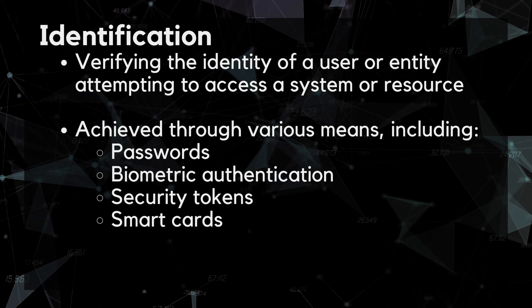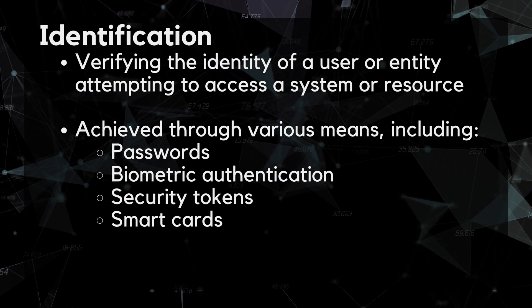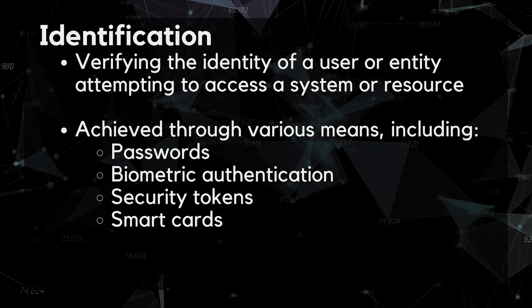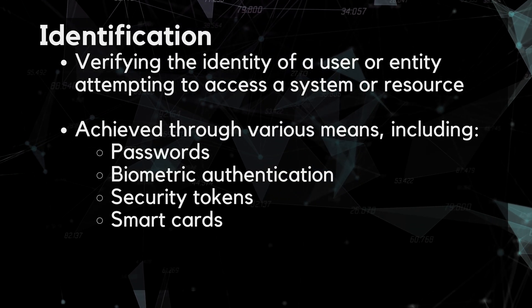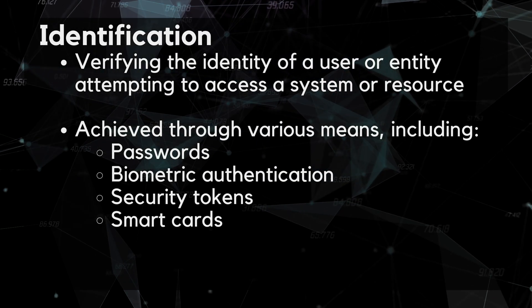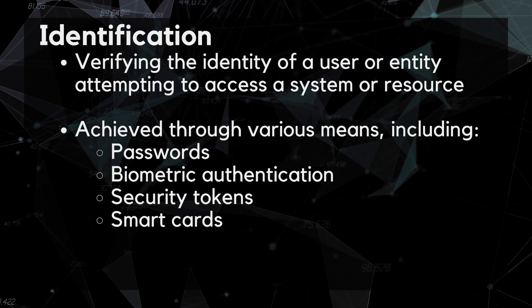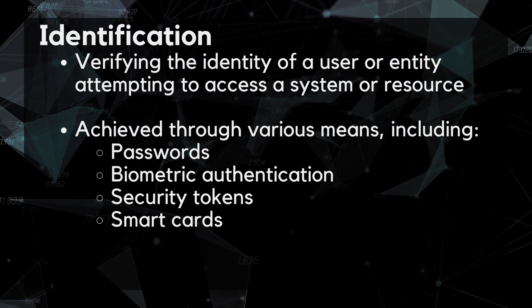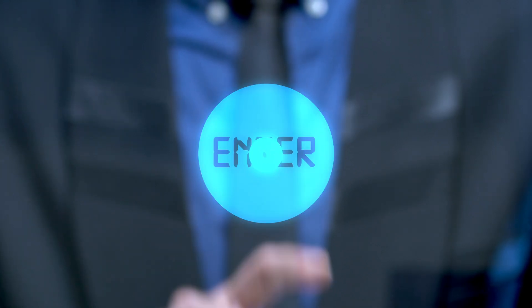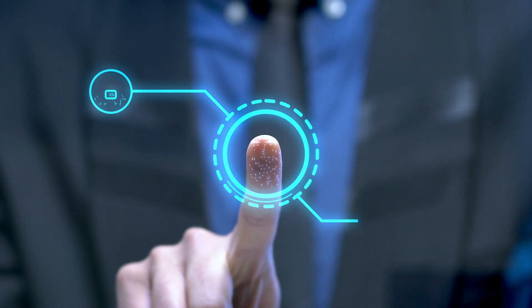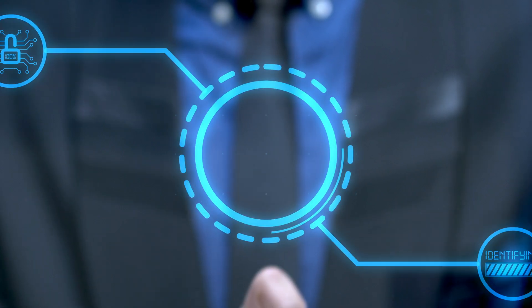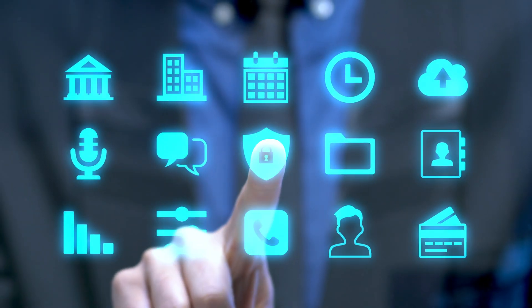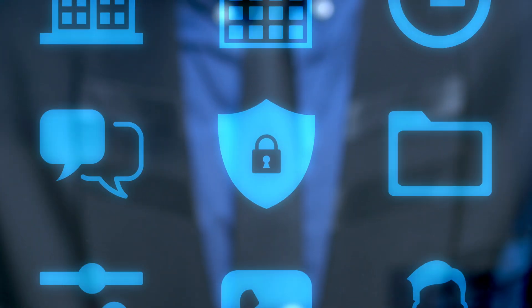The first component is Identification. Identification is the process of verifying the identity of a user or entity attempting to access a system or resource. It can be achieved through various means, including passwords, biometric authentication, security tokens, and smart cards. The goal of identification is to establish the identity of the user or entity and to ensure that only authorized users are granted access.